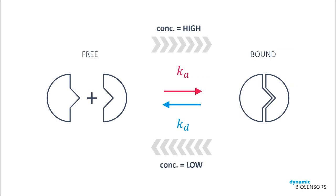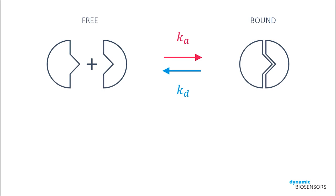In this case, high and low depends on the affinity of the molecular interaction. For every interaction, one can define a characteristic concentration value, the KD value or dissociation constant. If concentrations are below the KD value, most molecules will be in the free state. If concentrations are above the KD value, most molecules will be bound to one another.